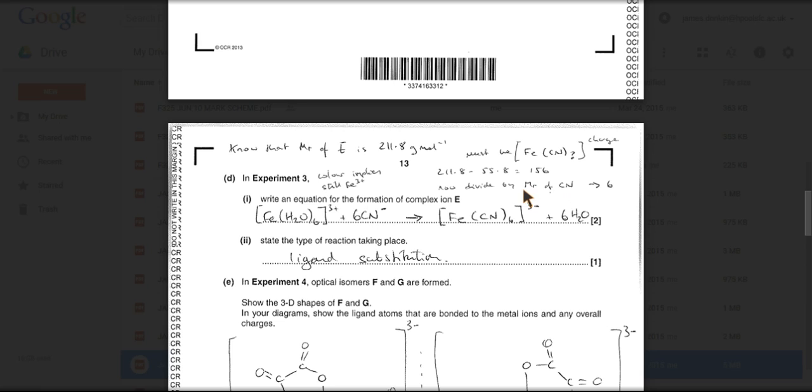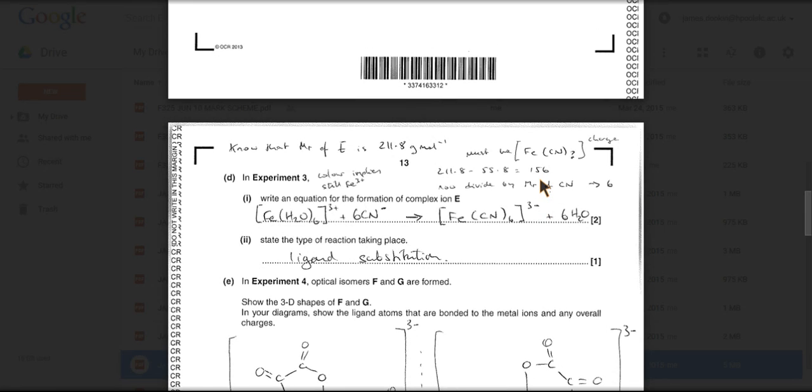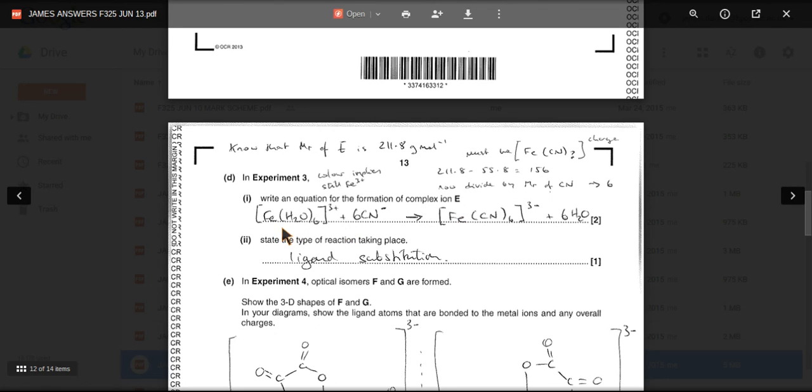I've divided by the mass of CN and that gives me six CNs have gone on to this, and so we're talking about Fe(CN)6, and that would have a 3- charge - that's 3+ there, 1- each, so it's 3- overall. And so the equation: Fe(H2O)6^3+ reacting with six cyanide ions, so we've got this ligand substitution reaction taking place.